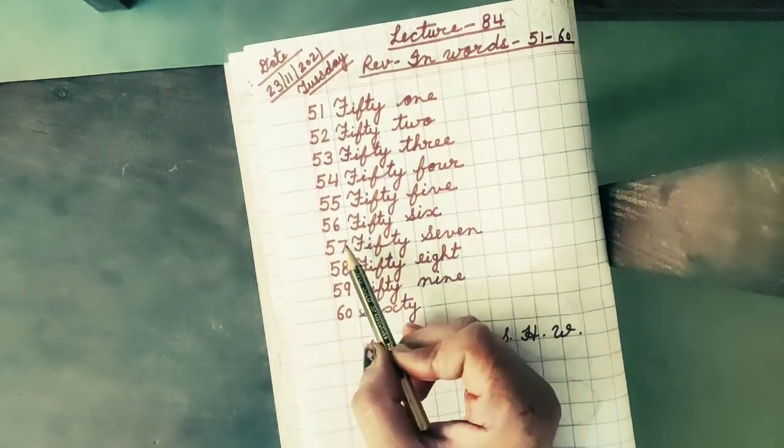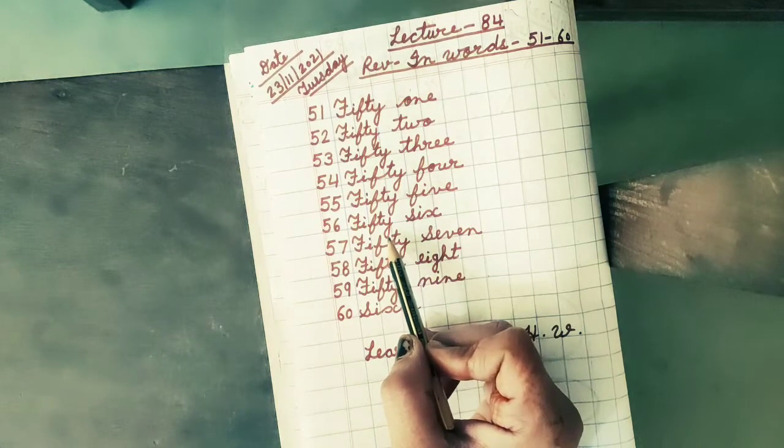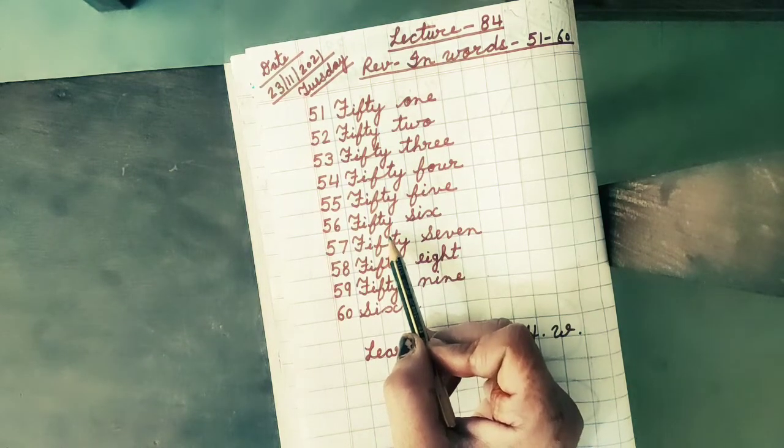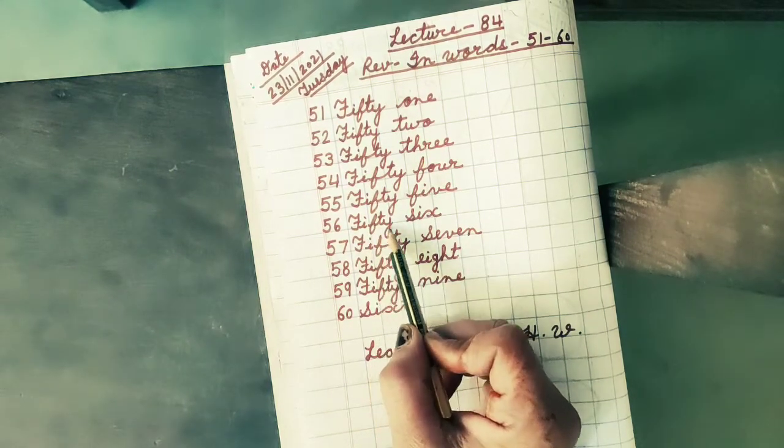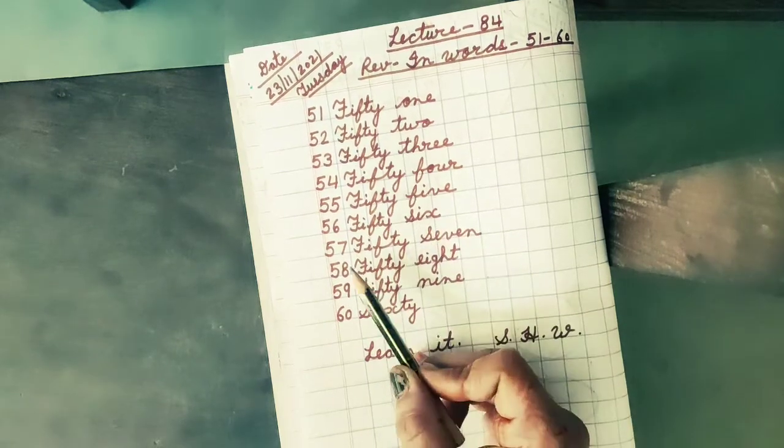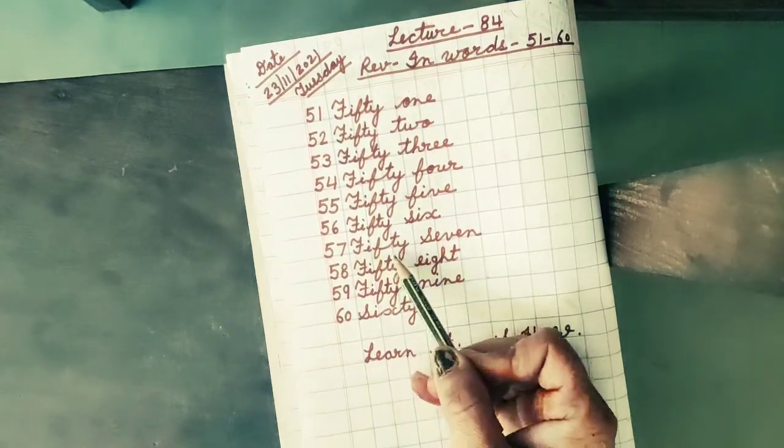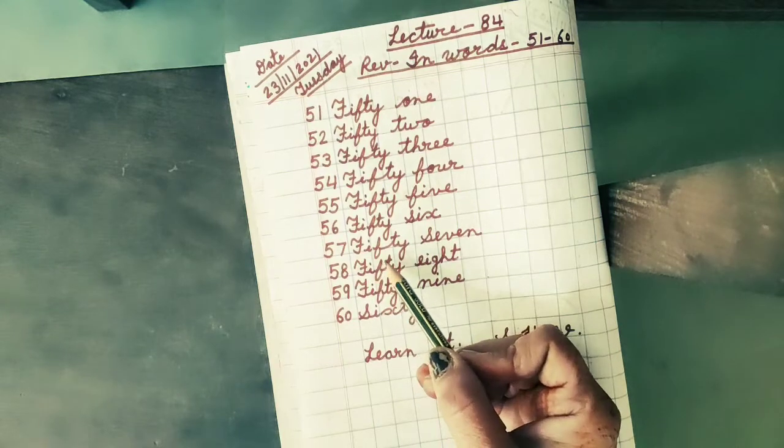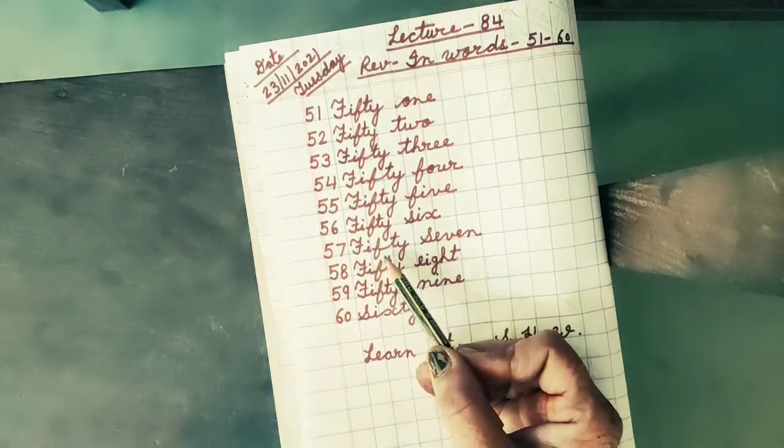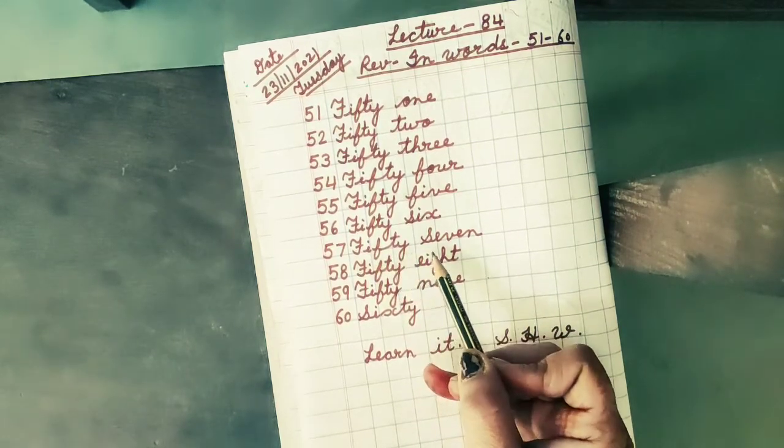Next number is 56. The spelling of 56 is F, I, F, T, Y, 50, S, I, X, 6. Next spelling is 57. The spelling of 57 is F, I, F, T, Y, 50, S, E, V, E, N, 7.